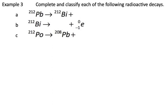In order to complete the left side, we need the atomic number of lead, which is 82. That decays into bismuth 212 and something else. We can look at the periodic table and find the atomic number of bismuth, which is 83.